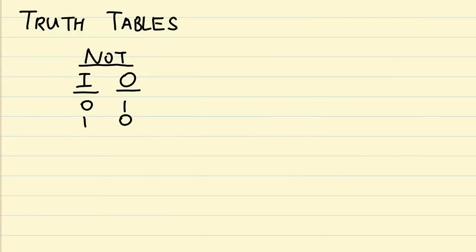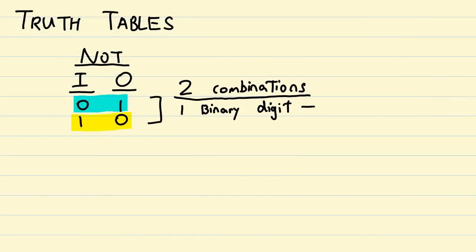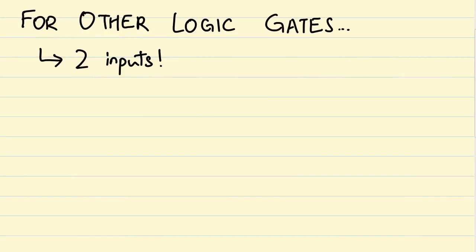For the NOT gate, which was one input gate, notice how in the truth table there are only two rows because the single input leads to only two possible input values. Now, however, we have two inputs, and the total number of combinations that can be generated by these two inputs is actually 4.